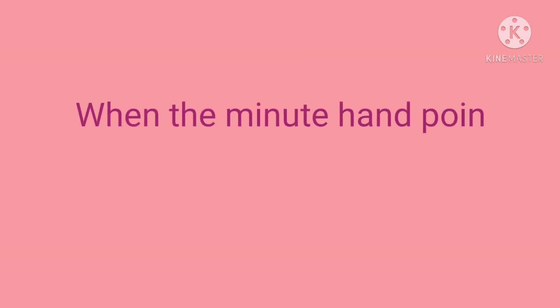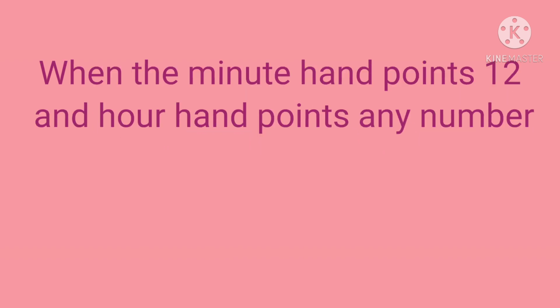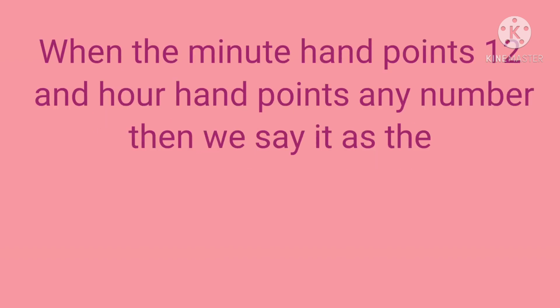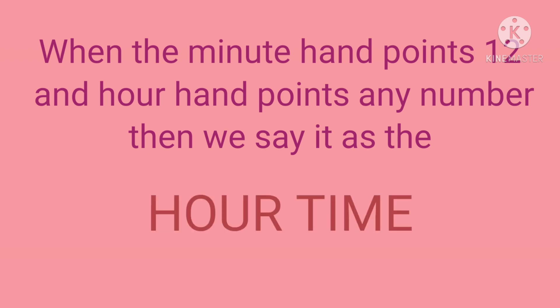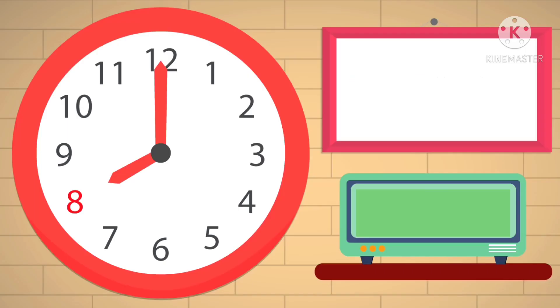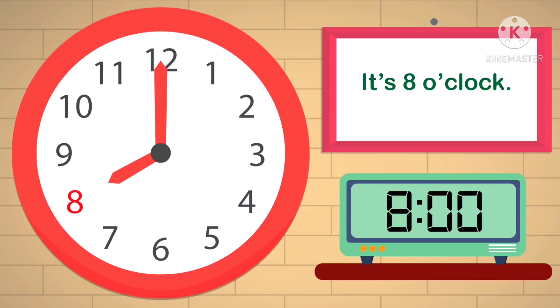Now let us learn to read the time to the hour. When the minute hand is at 12 and the hour hand is on any number, then the time is that hour. For example, if the minute hand points to 12 and the hour hand points to 8, then the time is 8 o'clock. Or we can write the time as shown above.